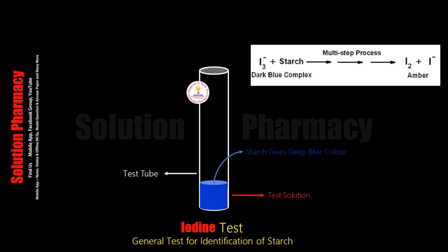And if starch is absent in our sample, no color change takes place — meaning no blue color forms upon adding iodine solution. So this is how we can perform the iodine test to detect the presence of starch in any sample.